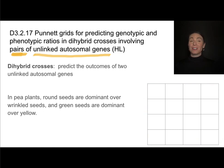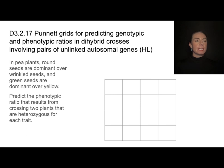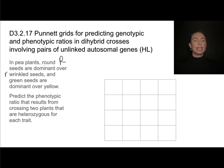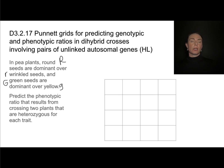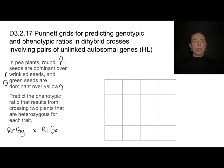You'll notice that instead of four squares, there are 16 squares in a dihybrid cross. Round is big R and wrinkled is little r, because round is dominant over wrinkled — same gene, same letter, just capital and lowercase. Green is dominant over yellow, so I'll use big G for green and little g for yellow. We need to predict the phenotypic ratios resulting from crossing two plants that are heterozygous for each trait. Plant one is RrGg and plant two is also RrGg.